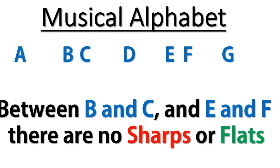All in all, there are twelve notes in the musical alphabet: seven natural notes — A, B, C, D, E, F, G — and five in-between notes that are each assigned either a sharp or a flat name. So seven natural notes plus five sharps or flats equals twelve notes total.